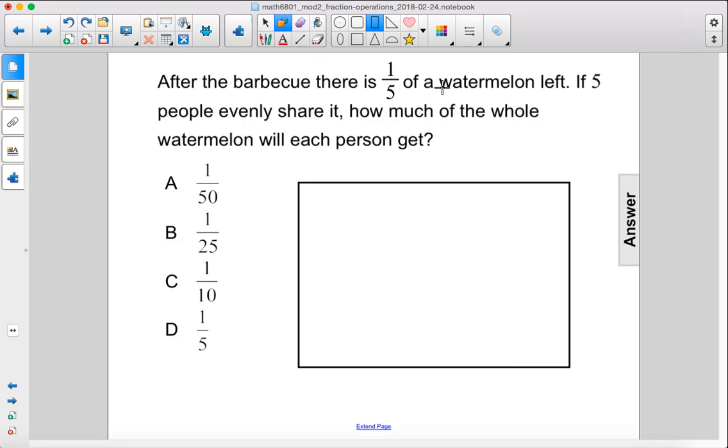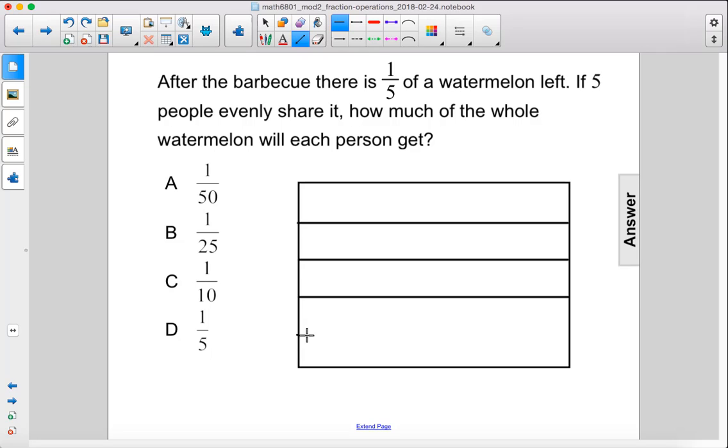One-fifth of a watermelon is left, so we'll divide this up into fifths as well as I can. One, two, so let's draw four lines. That's pretty good.